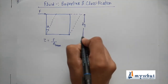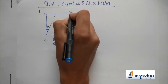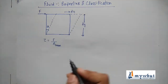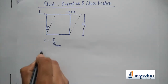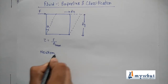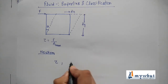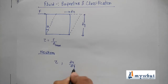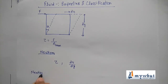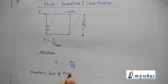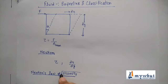If we consider this distance as dy and the velocity during this process as du, then we have a relation proposed by Newton which gives us the relation between shear force and the velocity gradient du/dy. That relation is known as Newton's law of viscosity.